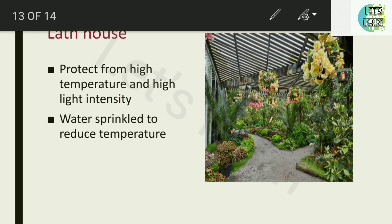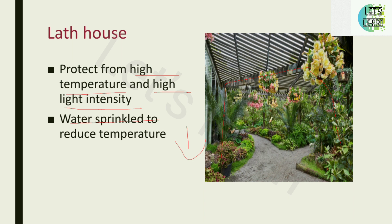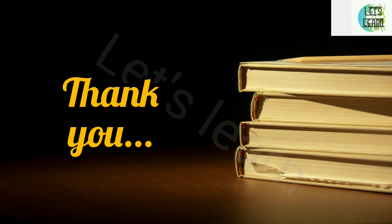The last structure is the lathe house. It protects plants from high temperature and high light intensity. It is covered with small-gapped wooden slats, and if the temperature rises, water is sprinkled to reduce it. These are the most commonly used protected structures. Thanks for watching — like, share, and subscribe to the channel.